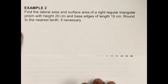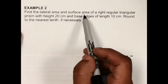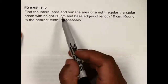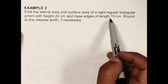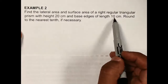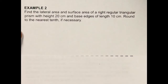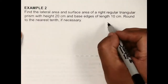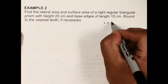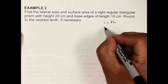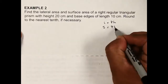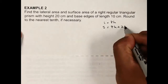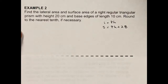This next example: find the lateral area and surface area of a right triangular prism with a height of 20 centimeters and base edges of 10 centimeters. I'm going to leave that one for you to try. Remember that your lateral surface area is P times H, and your total surface area is pH plus 2B.